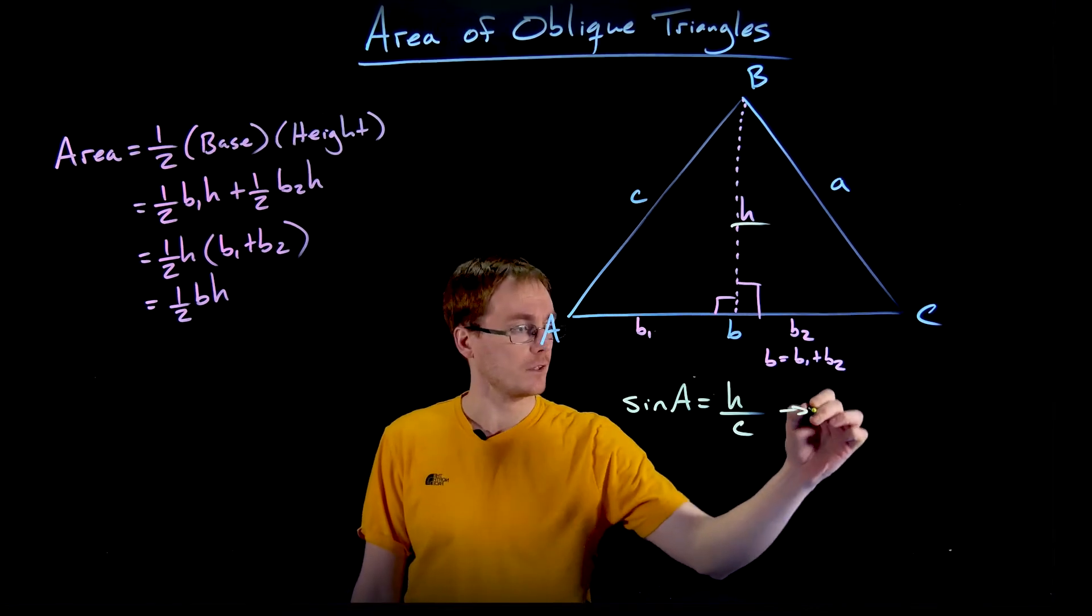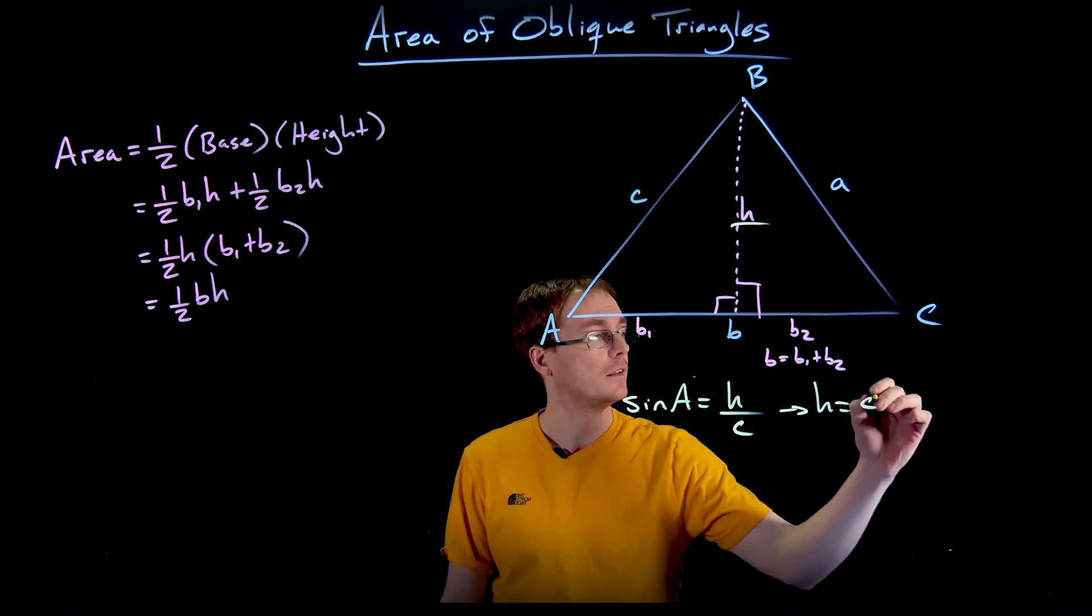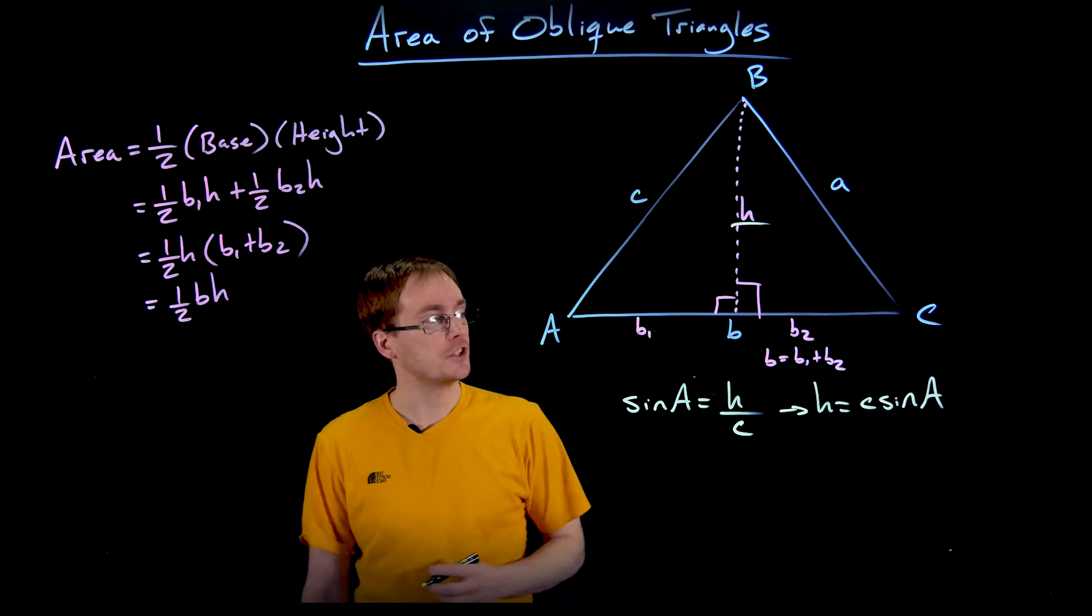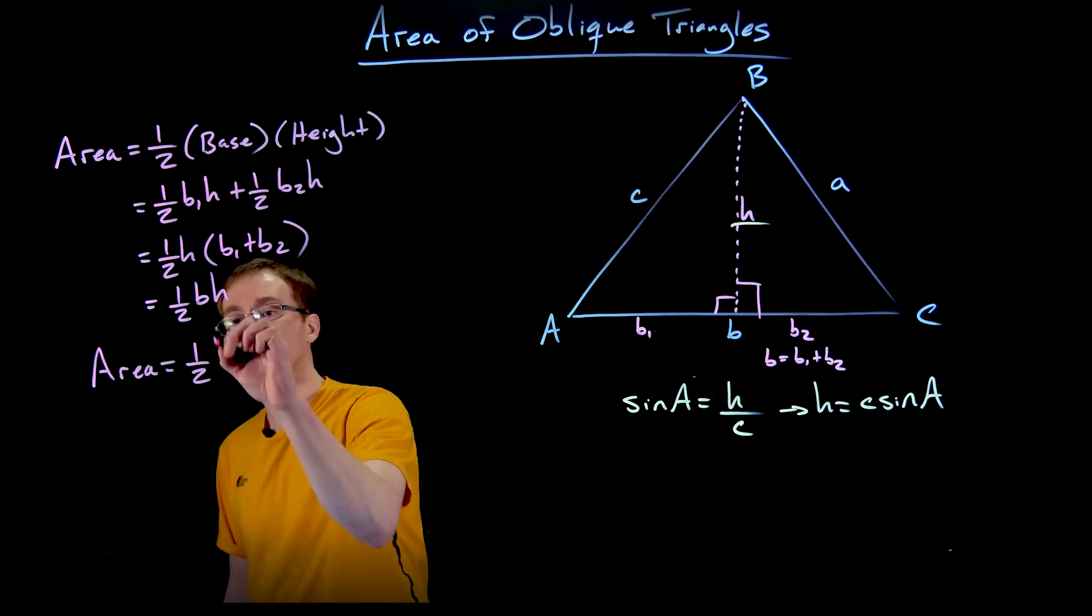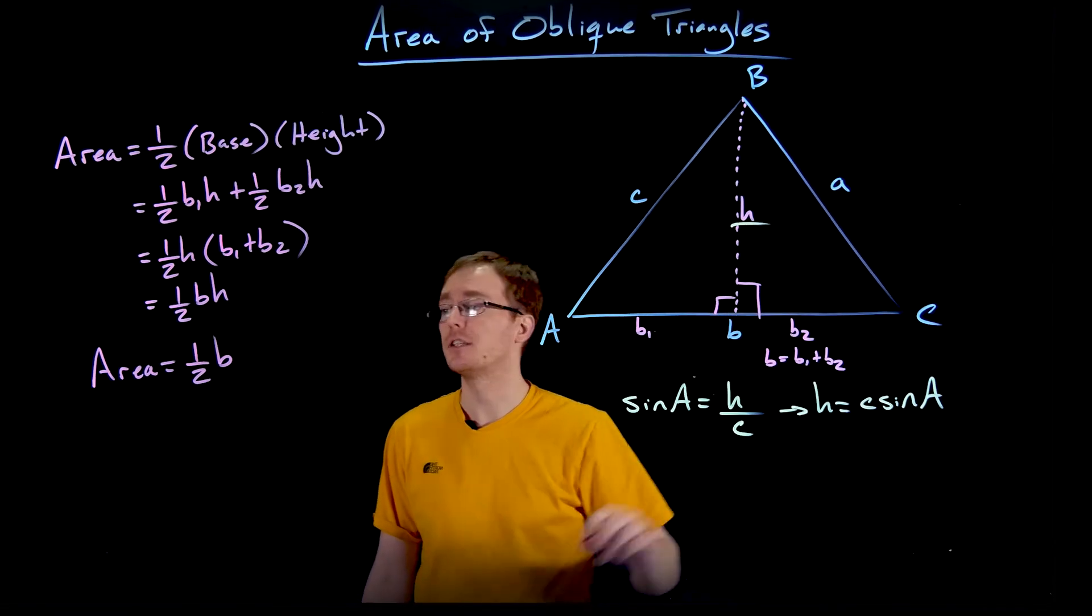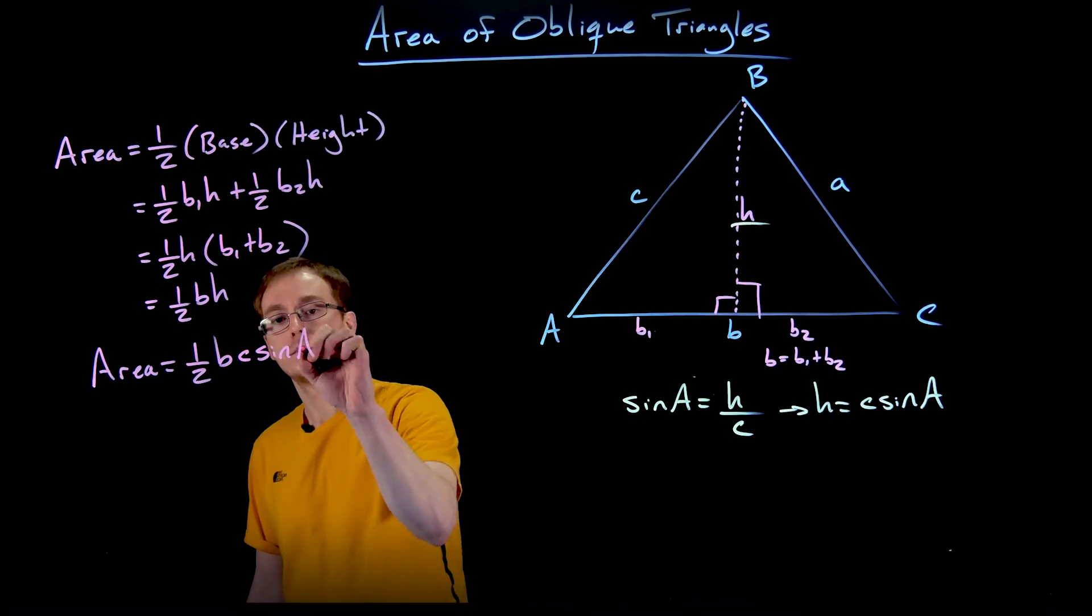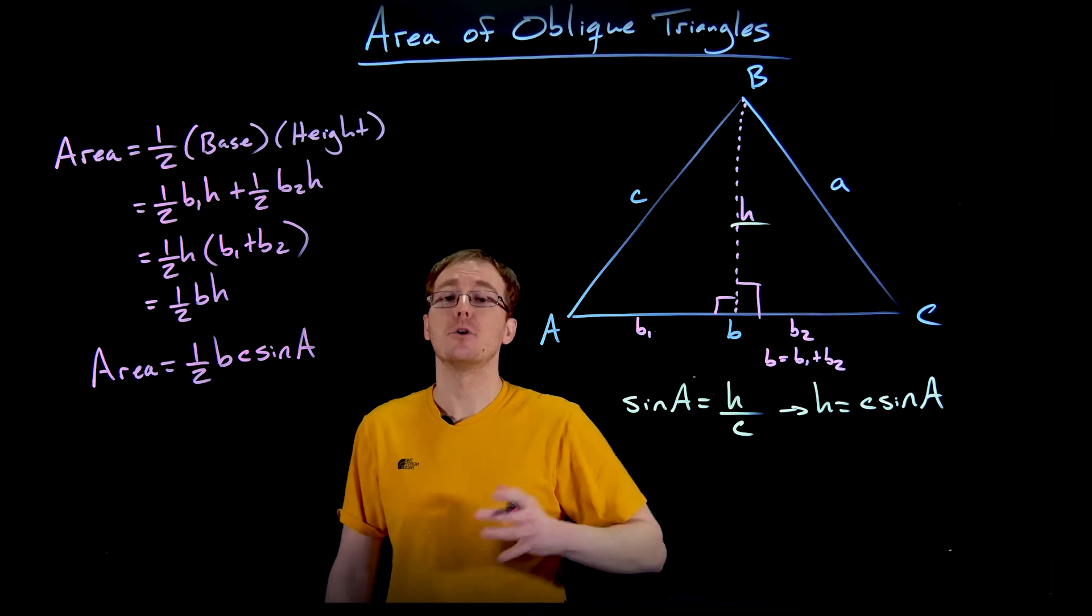Well, from this, we can solve for H by multiplying both sides by C. And we see that H is equal to C times sine of A. We have one half times B times H, but H is equal to C times sine of A. And we get the first version of our area formula for an oblique triangle. It's one half B times C times sine of angle A.